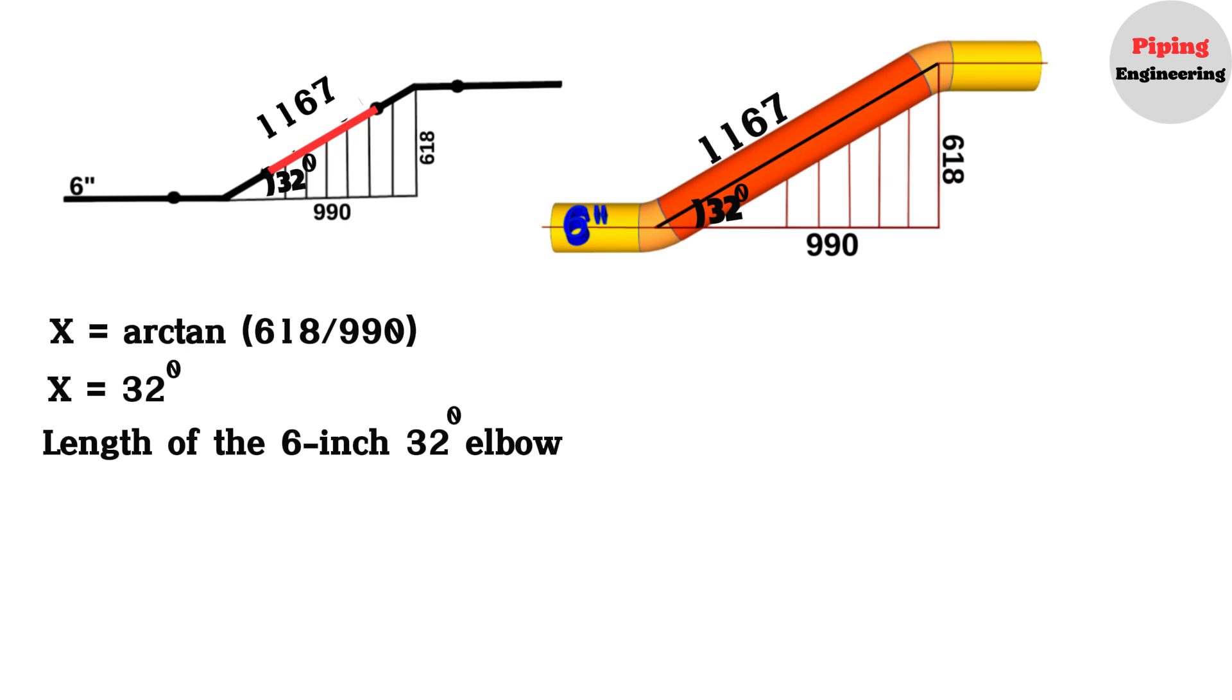We will use this formula to find the length of the elbow. The elbow length will equal the tangent of elbow angle divided by 2, times 1.5 times the nominal pipe size, NPS, of the elbow, multiplied by 25.4.